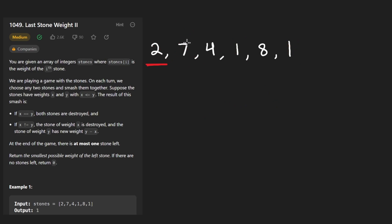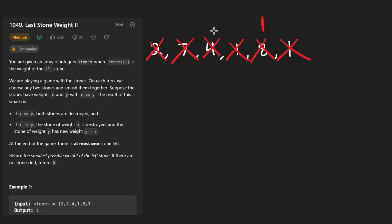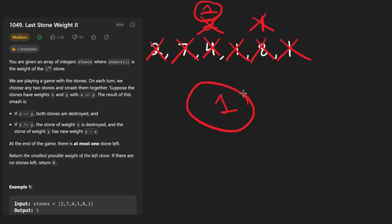We can take any two stones, smash them, and repeat this process as many times as we want. For example, smash these two together — equal weight, destroyed. Smash these two — one left over. Then smash the two and the four, left with a two. Then smash those two together, left with just a one. And then we would return one.